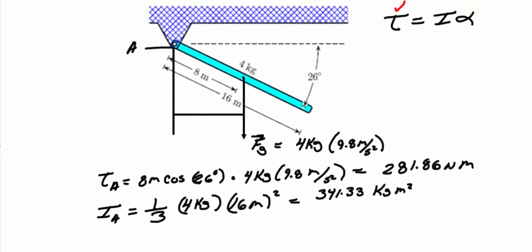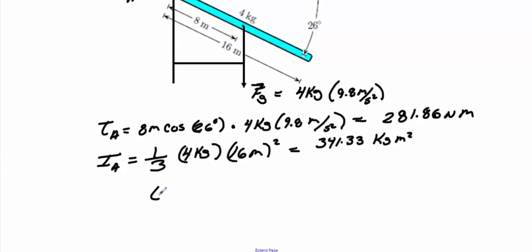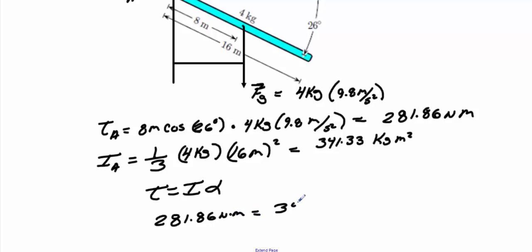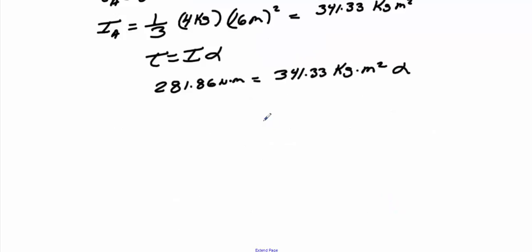Now we can find our angular acceleration by using torque equals moment of inertia times angular acceleration. That gives us 281.86 newton meters equals 341.33 kilogram meters squared times angular acceleration. Solving for angular acceleration, we get 0.8258 radians per second squared. That is the angular acceleration initially when the rod is released.